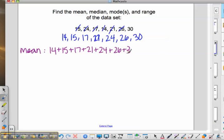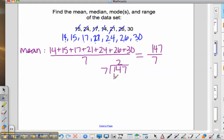So 14 plus 15 plus 17 plus 21 plus 24 plus 26 plus 30 divided by—we have 1, 2, 3, 4, 5, 6, 7 values in the data set. When you add these together, you get 147 divided by 7. Long division: 147 divided by 7 equals 21. So the mean is 21.